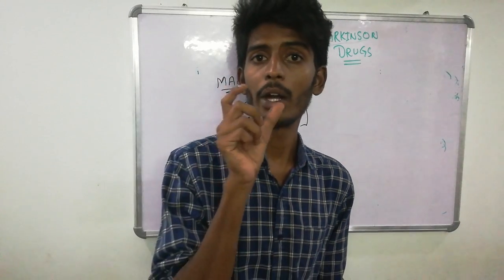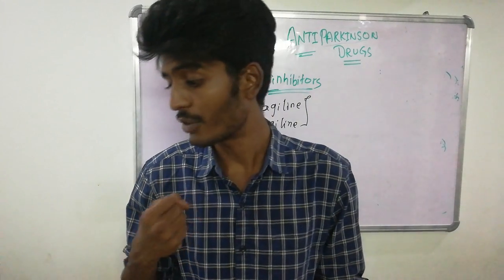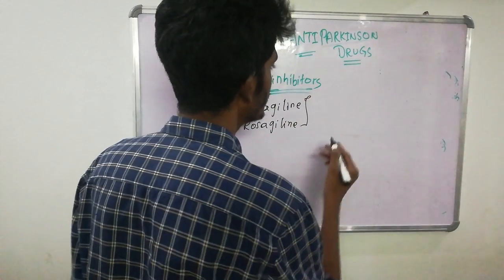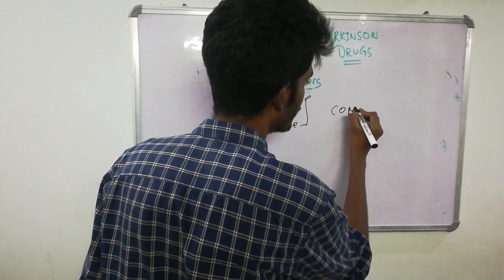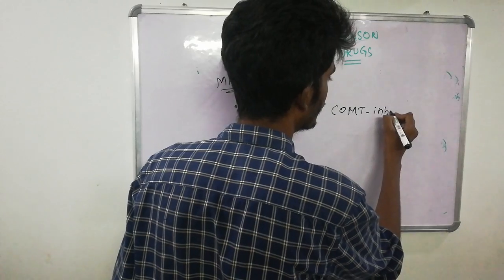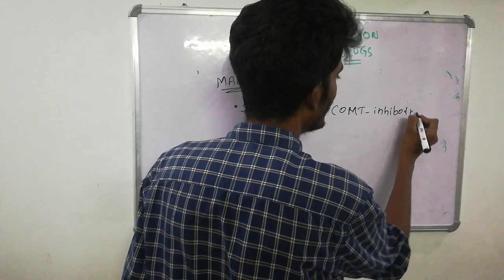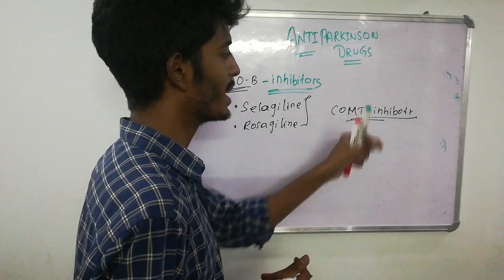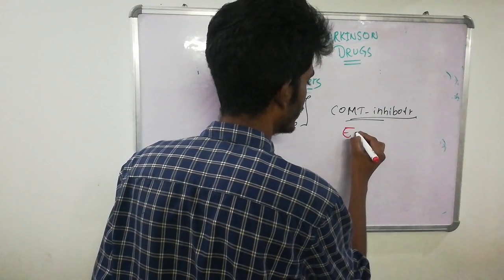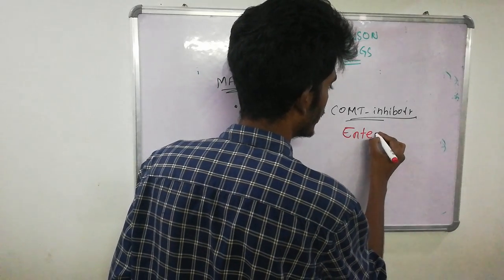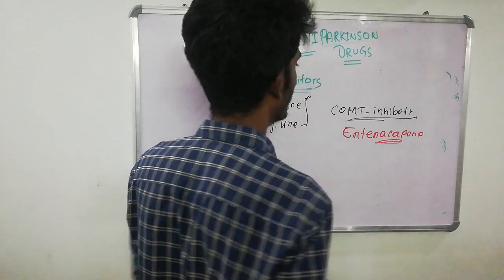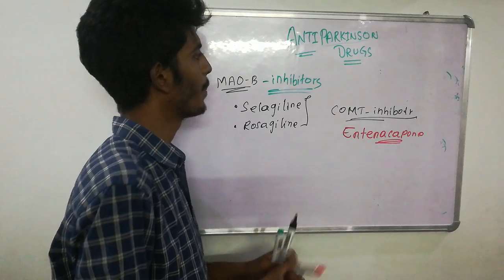Dopamine is also metabolized by COMT — catechol O-methyltransferase. We can use COMT inhibitors to prevent dopamine breakdown. The drug used here is entacapone, which is used for the treatment of Parkinson's patients.